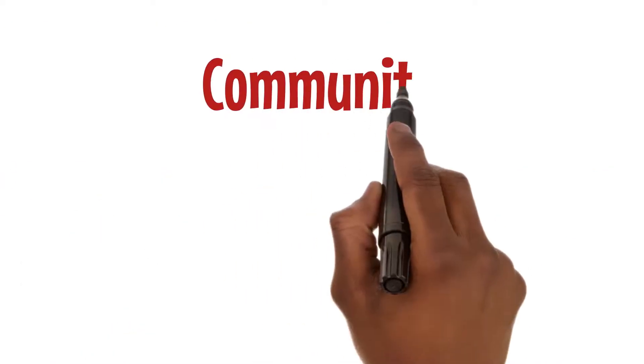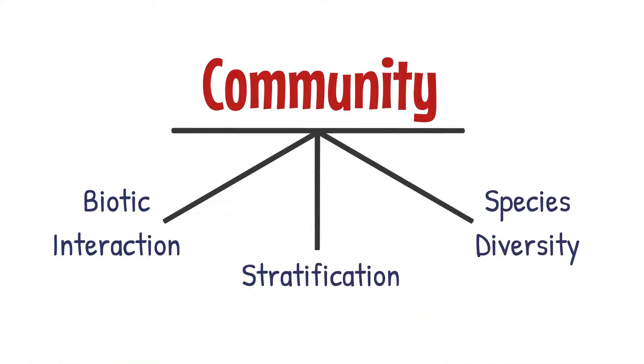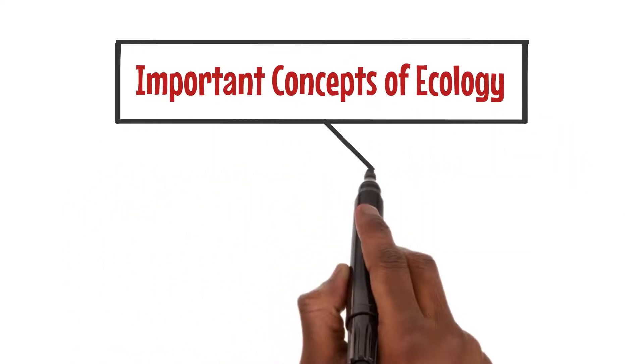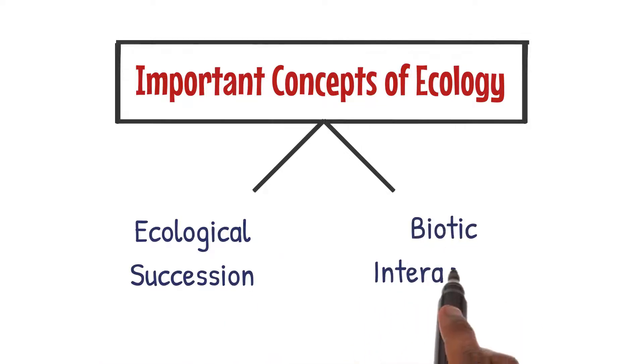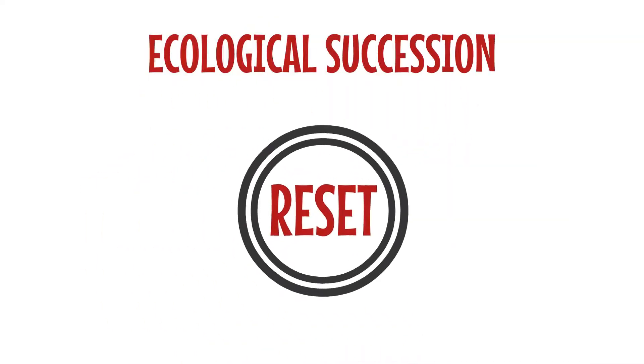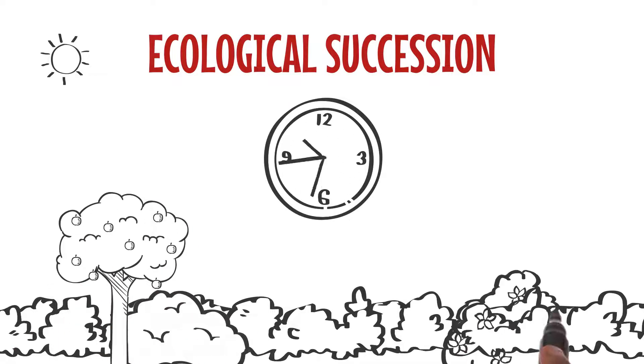Think of it as a colorful tapestry with different threads woven together. Moving ahead, we are going to explore two important concepts in ecology: ecological succession and biotic interactions. Ecological succession is like nature's way of hitting the reset button. It's the process of how an ecosystem changes and develops over time.